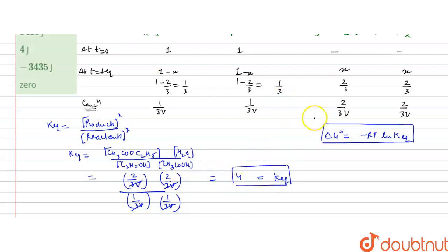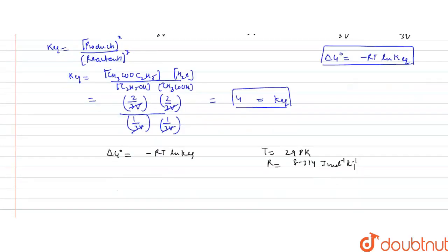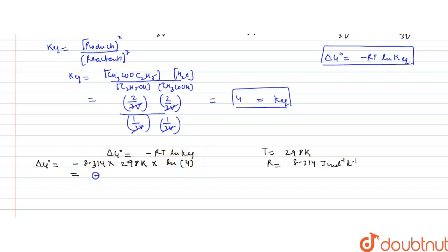Now we can calculate ΔG° by putting the value of Kc into the equation. ΔG° at 298 K = −RT ln K_eq. Temperature is 298 K and R = 8.314 J/mol·K. So ΔG° = −8.314 × 298 × ln 4. The value of ln 4 is approximately 0.6 × 2, so ln 4 ≈ 1.386, but here the speaker uses ln 4 ≈ 0.6 (as a factor leading to the stated answer).